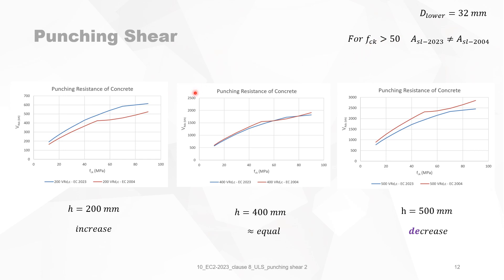Looking at different graphs by slab depth: for a slab of 200 mm depth, for a slab of 400 mm the capacity is almost equal between the two code versions, and for a slab of 500 mm there is clearly a decrease in concrete shear capacity.